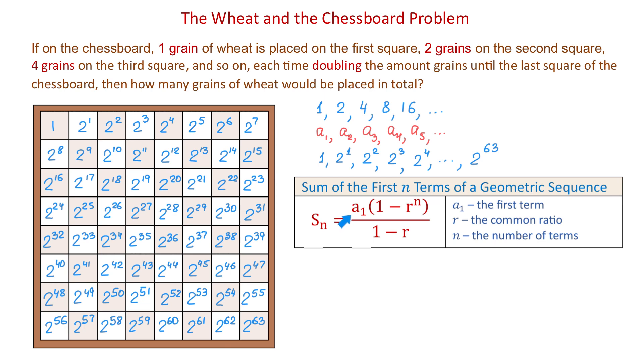In this formula, A sub 1 is the first term, r represents the common ratio, that is the number that we multiply by to get the next number, and n represents the number of terms.